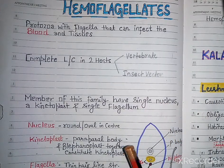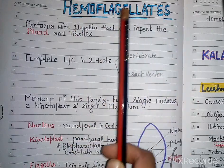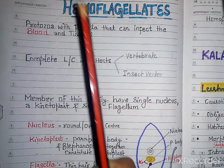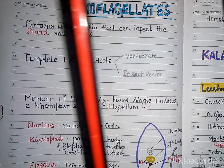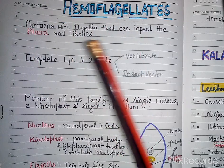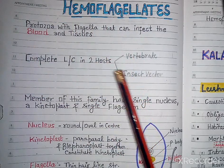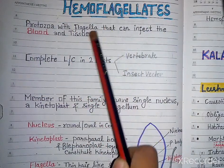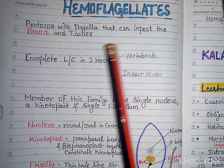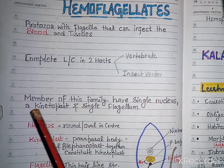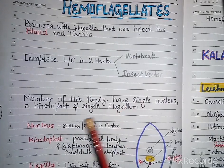Kala Azar is caused by Leishmania Donovani. Leishmania Donovani are hemoflagellates — a protozoan having a flagellum which infects our blood and tissues. Hemoflagellates complete their life cycle in two hosts: one vertebrate and another insect vector. If you look at hemoflagellates in morphological form, they have a single nucleus, a kinetoplast, and a single flagellum.